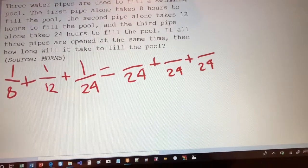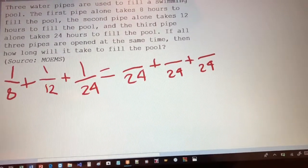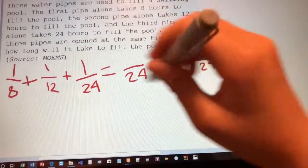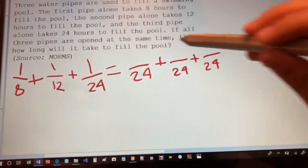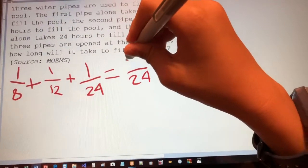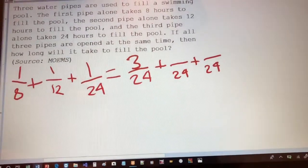And then over here, since we're converting into a common denominator of 24, we need to change the numerator. So since 8 times 3 is 24, that means we have to have 1 times 3, which is 3. So this numerator here is 3.